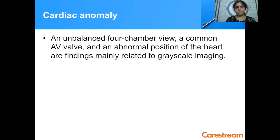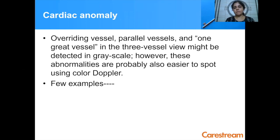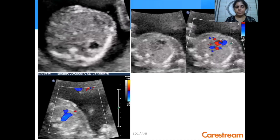If you are doing fetal cardiac screening, an unbalanced four-chamber view, a common AV valve, or an abnormal position of the heart are findings mainly related to grayscale imaging. Unilateral perfusion of one ventricle, AV insufficiency, and retrograde flow in one of the vessels in the three-vessel view are findings related to color Doppler. Overriding vessels, parallel vessels, and one great vessel in the three-vessel view might be detected on grayscale, but these abnormalities are probably easier to spot using color Doppler.